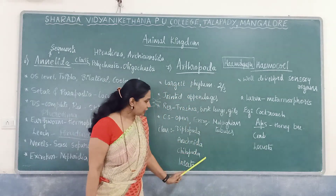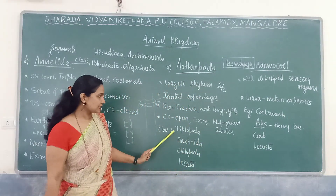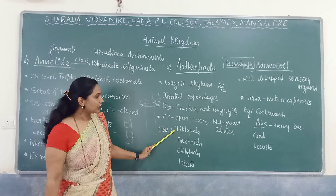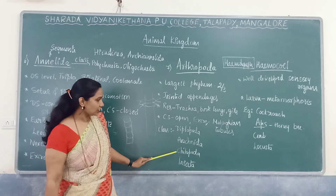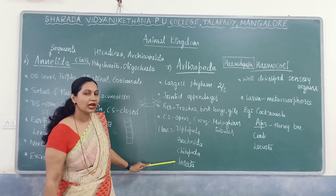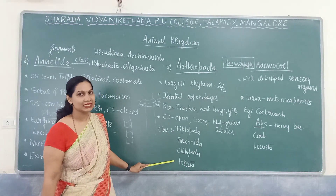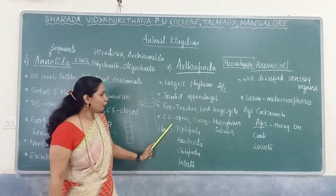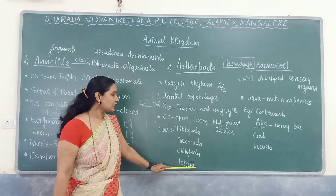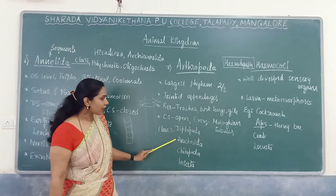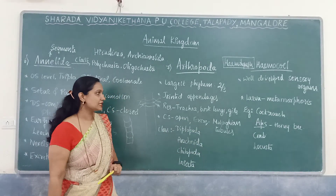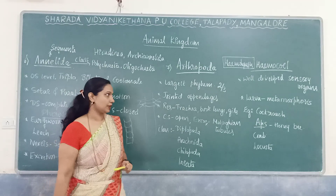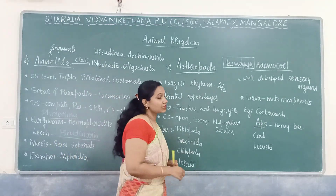Arthropoda mainly includes four classes: Diplopoda, Arachnida, Chilopoda, and Insecta.